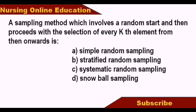A sampling method which involves a random start and then proceeds with the selection of every kth element from then onwards is dash. Options: first, simple random sampling; second, stratified random sampling; third, systematic random sampling; fourth, snowball sampling.